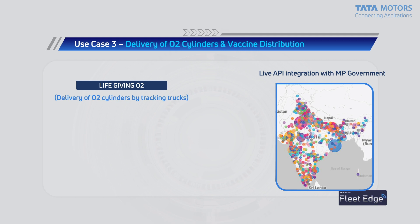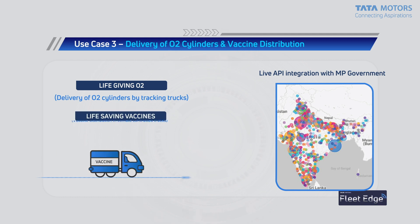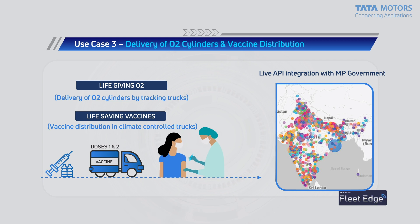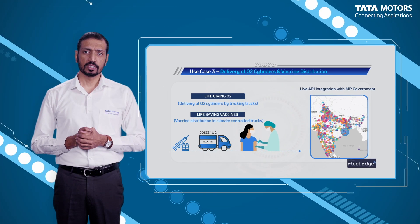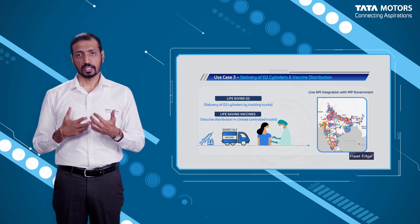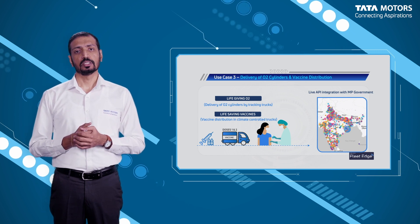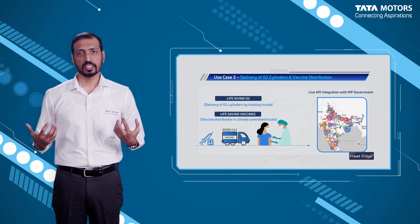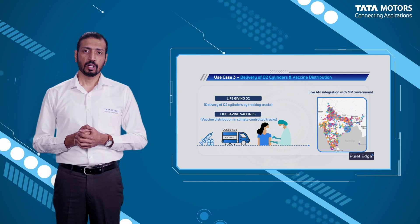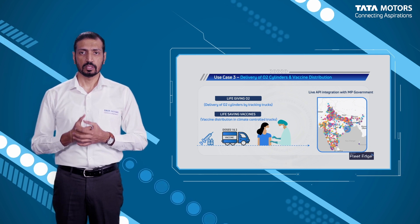Similarly, we have other examples of using FleetEdge and our connected vehicle platform to track life-saving vaccines. There are a myriad number of applications we can use this for to really drive change in the way we execute core processes and get amazing outcomes — all being leveraged with the strength and power of digital transformed solutions that we are able to implement.